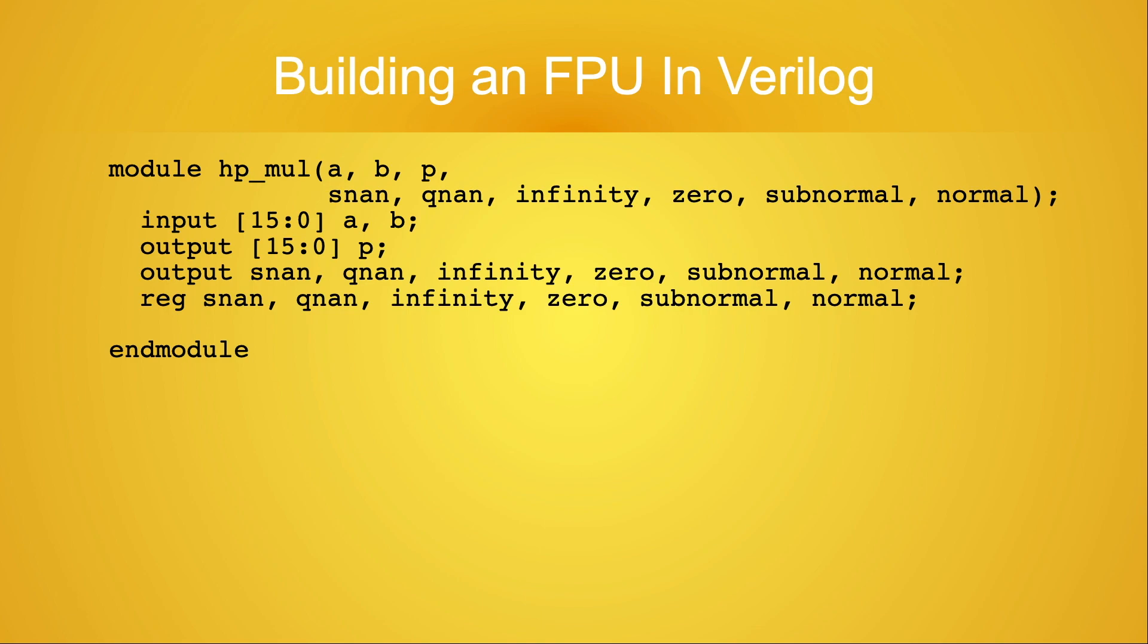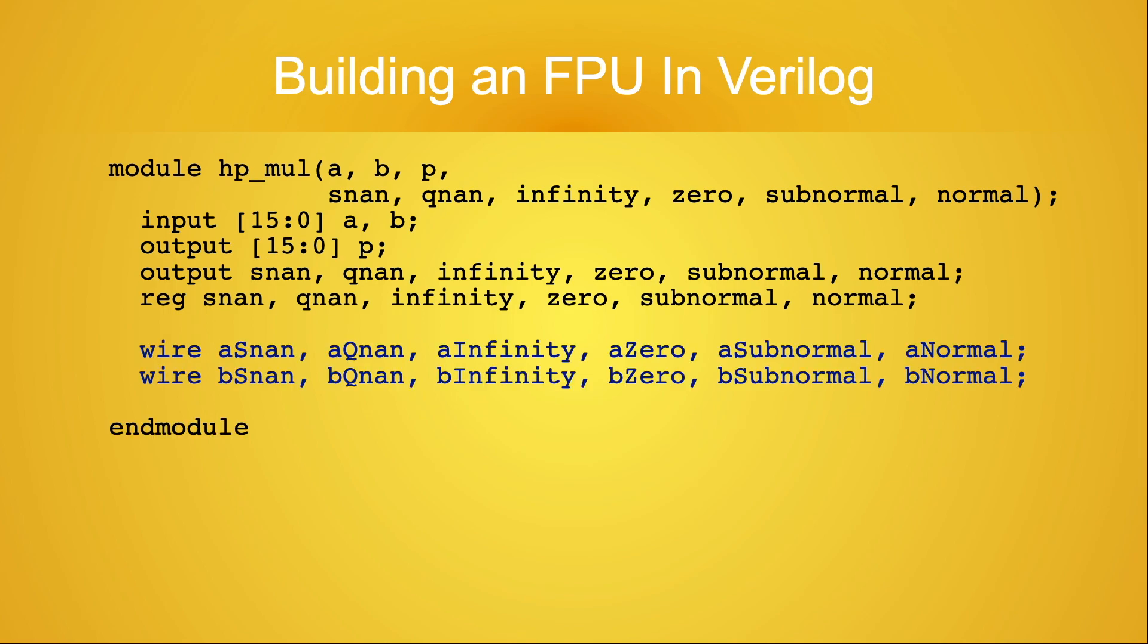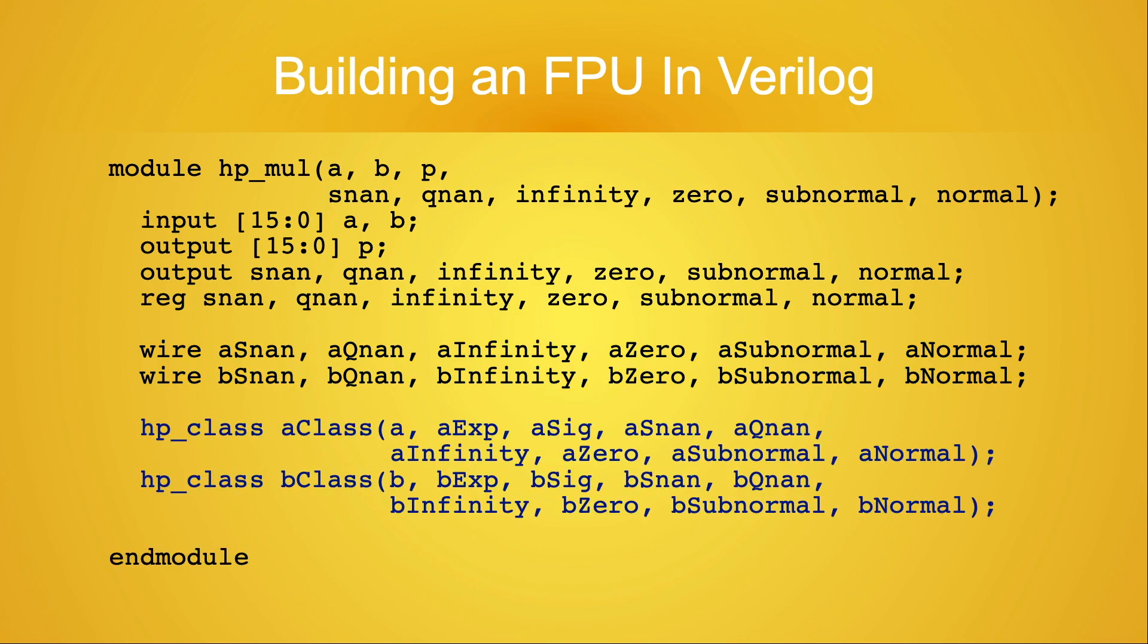For this, I'm using the HPClass module, which was written and tested in the two previous videos. The HPClass module outputs six 1-bit flags. I'll need two sets of these flags, one set for each of the two input values, so I declare them here.